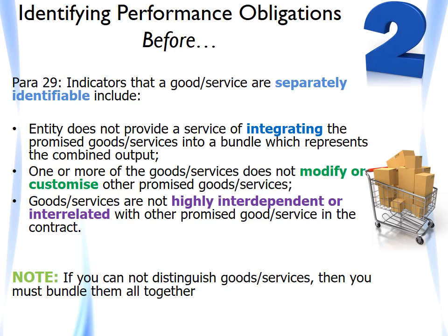In the exposure draft, the IASB proposed new examples and amendments to existing examples accompanying IFRS 15. The FASB, however, decided to propose amendments to their Topic 606 to clarify the guidance, including expanding the articulation of the separately identifiable principle and reframing the existing factors to align with the amended principle. Some respondents to the IASB's exposure draft asked for the same amendments proposed by the FASB to be incorporated into IFRS 15, expressing concerns about differences in wording between IFRS and US GAAP.